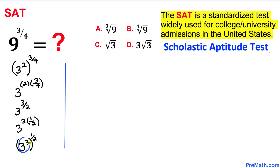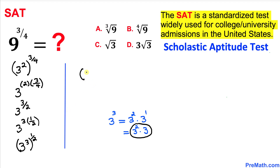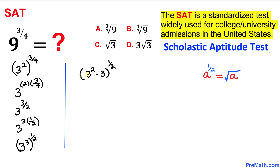Now let's focus on 3 power 3. We know that 3 power 3 can be broken down into 3 power 2 times 3 power 1. So our simplified form becomes 3 power 2 times 3, whole power 1 over 2.